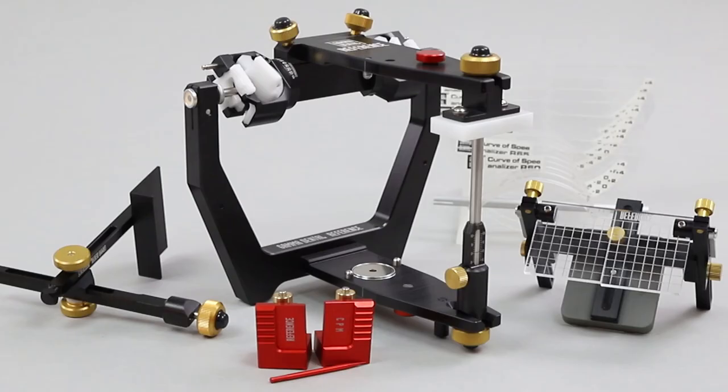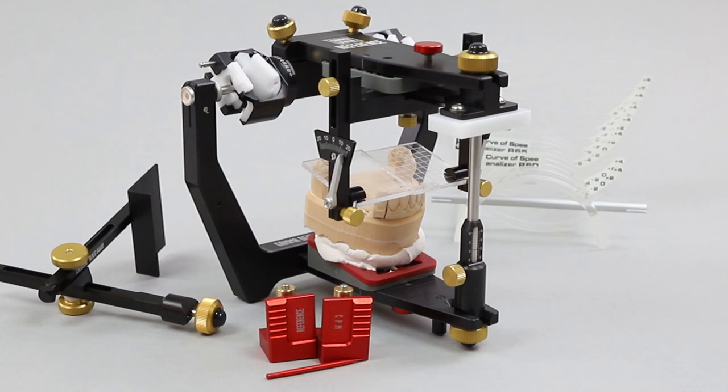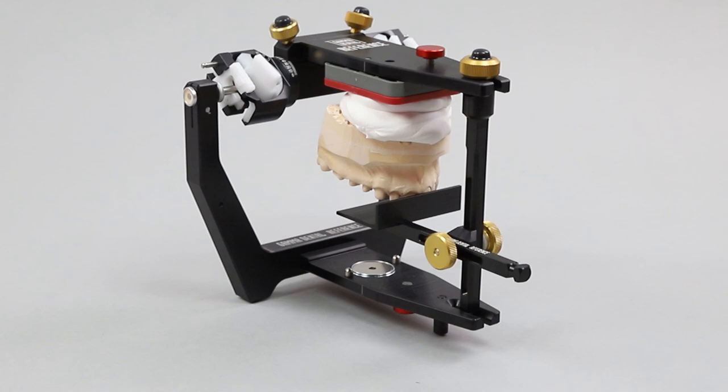The articulator can be utilized and expanded for many more features. For example, occlusion measurement, curve of Spee measurement, condyle position measures, and anterior guide measurement.